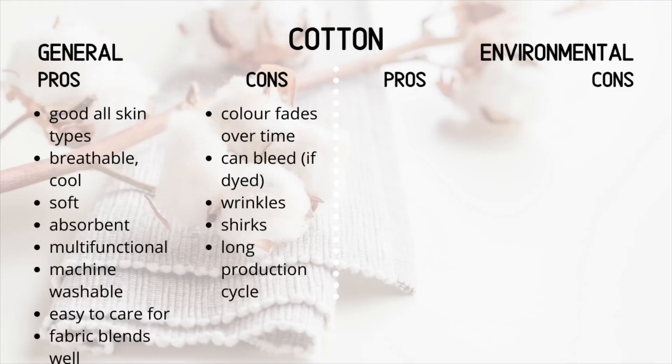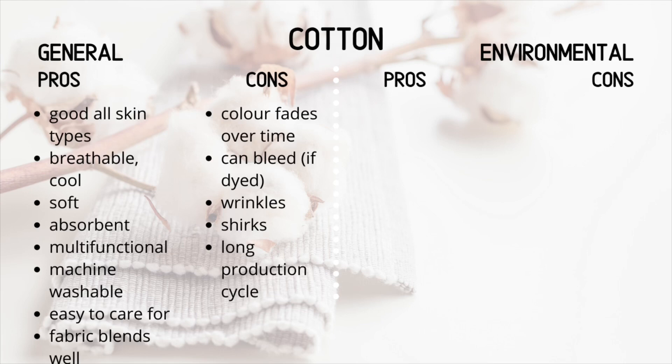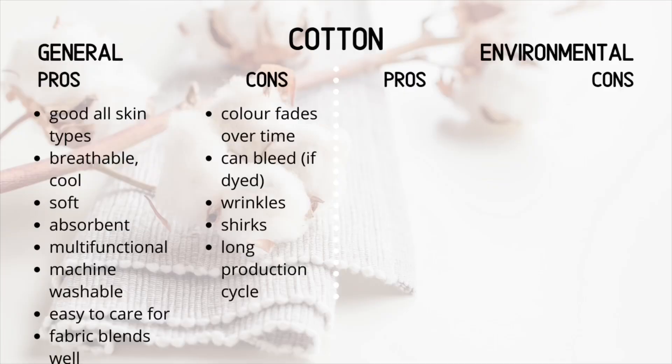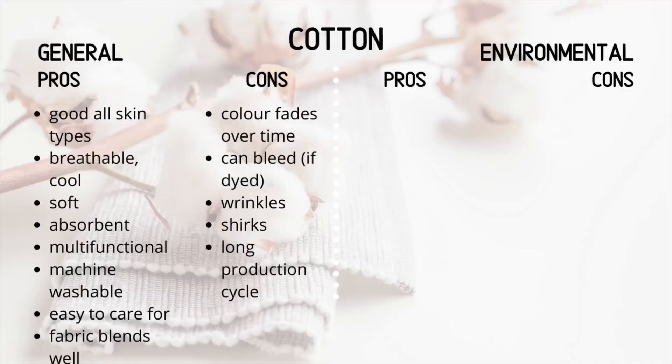The cons: the color can fade over time, especially the more times you wash it. It can bleed — meaning the color might appear darker in some areas and lighter in others, especially after washing over time. It can wrinkle, so you do need to iron items, but a good tip is to give it a good shake when it comes out of the washing machine, hang it on a hanger, and it will wrinkle less while drying. It can shrink, so you really have to wash it at the advised temperature, which is usually 30 to 40 degrees Celsius. It also has quite a long production cycle.